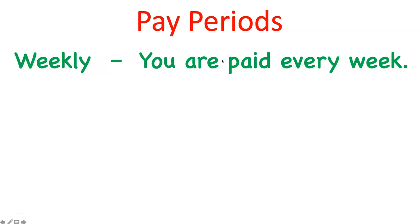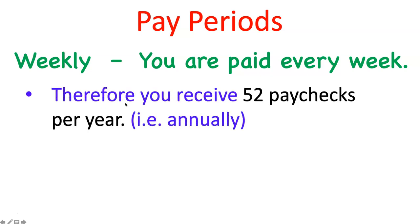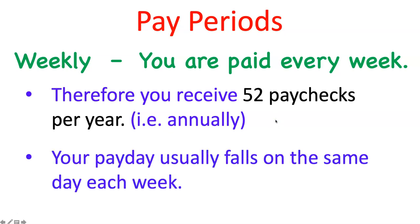Getting paid weekly simply means you get paid every week. Therefore you're going to receive 52 paychecks per year, or annually. If you see the word 'annually,' it simply means for the whole year. When you're paid weekly, your payday usually falls on the same day each week.